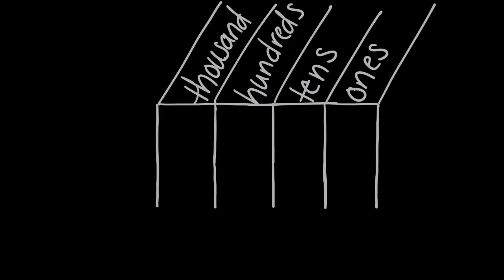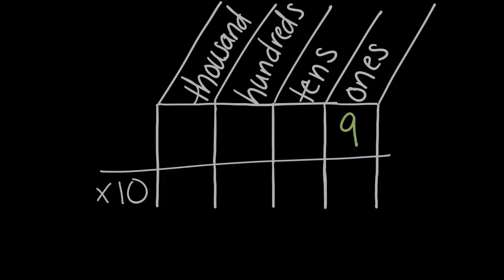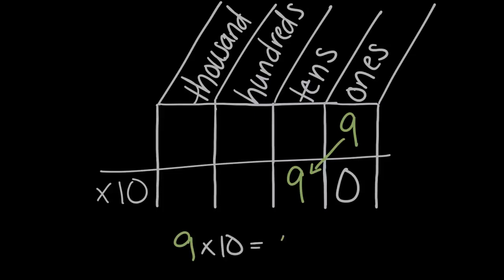Here we have a place value chart. To use that earlier example, when we had nine ones and we multiplied it by ten, our nine moved one place value to the left — it moved up to the tens. Now we had nine tens. We filled in a zero in the ones place, because there were no ones left, there were zero ones left. And so we saw that nine times ten was equal to 90. It's the same as adding a zero at the end, but we're looking at it in terms of place value — multiplying by ten moved every digit one place value to the left.